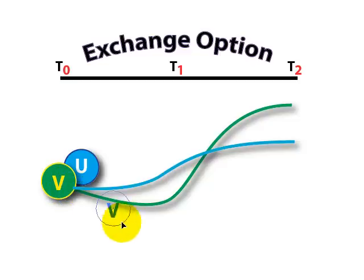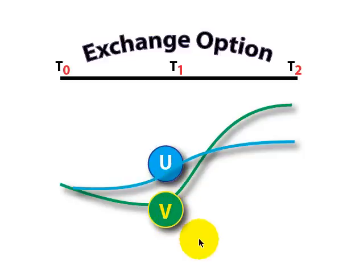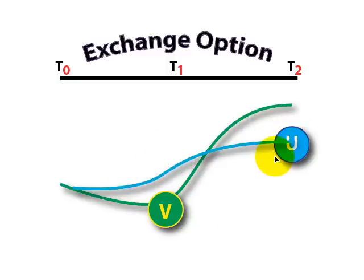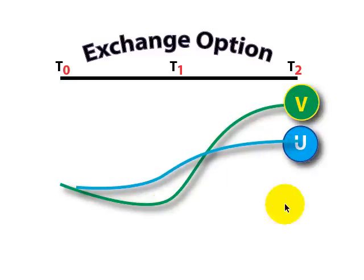So now if we go forward in time, say to T1, and our underlying asset V drops in price, but asset U increases in price, we're going to be underwater here. It's going to make no sense for us to exchange U and get back something cheaper. But maybe if we wait longer, the price of asset U will decrease, and the price of the underlying asset V will increase, such that if we get to time T2 here,